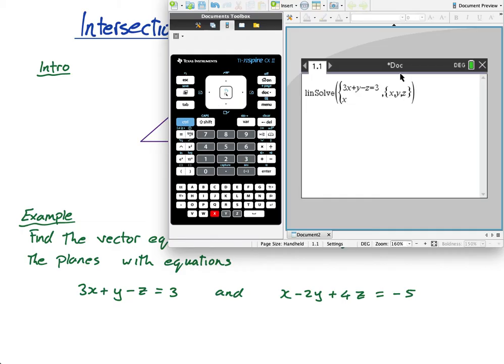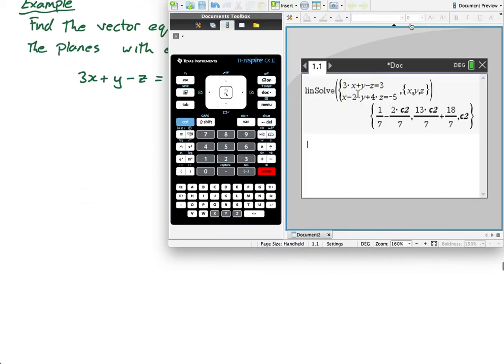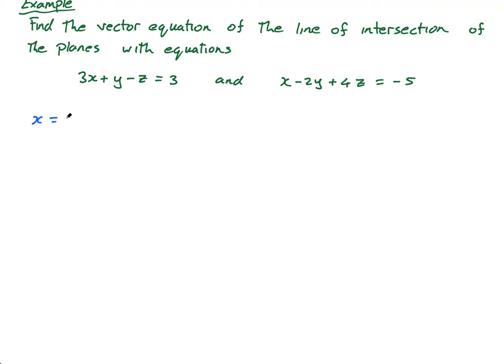So let me just show you what the calculator gives us. So x minus 2y plus 4z equals negative 5. Enter. OK, what on earth is this? Well, this C2 is their parameter. So remember, we have the parametric form of the vector equation of a line. This is the parametric form. It is essentially one seventh minus two sevenths T. So x is equal to one seventh minus two sevenths T.